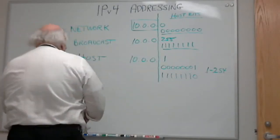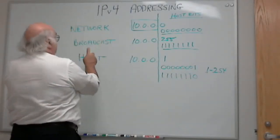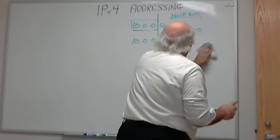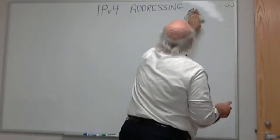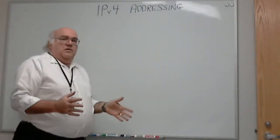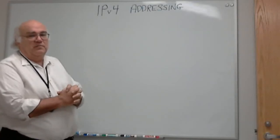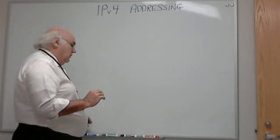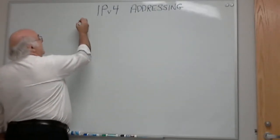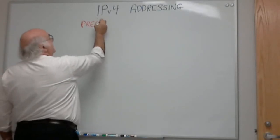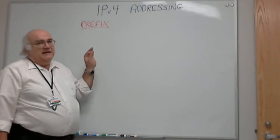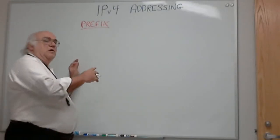Now let's look at the concept of prefix. In classful addressing, class A had the first byte as the network portion, class B had the first two bytes, and class C had the first three bytes. We refine that with classless addressing by using a prefix. The prefix length is the number of bits in the address that gives you the network portion of that address.